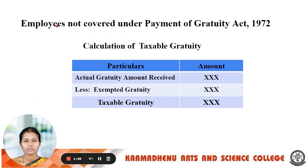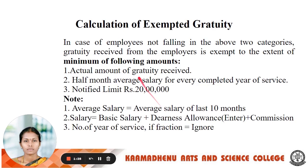Next, we calculate the taxable Gratuity for an employee not covered under the Payment of Gratuity Act 1972. The actual Gratuity amount received less the exempted Gratuity — the remaining will be taxable. The exemption limit is the minimum of the following amounts — whichever is less. First, the actual Gratuity amount received. Second, half month average salary for every year of completed service. Third, the notified limit of rupees 20 lakh. Note: average salary refers to the last 10 months' average salary; half means 1 divided by 2. For every year of completed services, service below or above 6 months will be ignored.